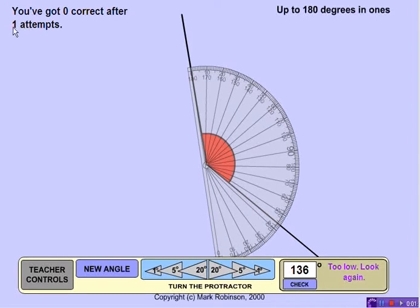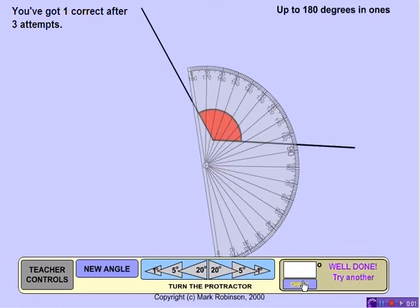So it tells me up at the top that I've had one attempt, zero correct. It tells me down here at the bottom that it's too low. So let me try 137. Still too low. Let me try 138. Well done.